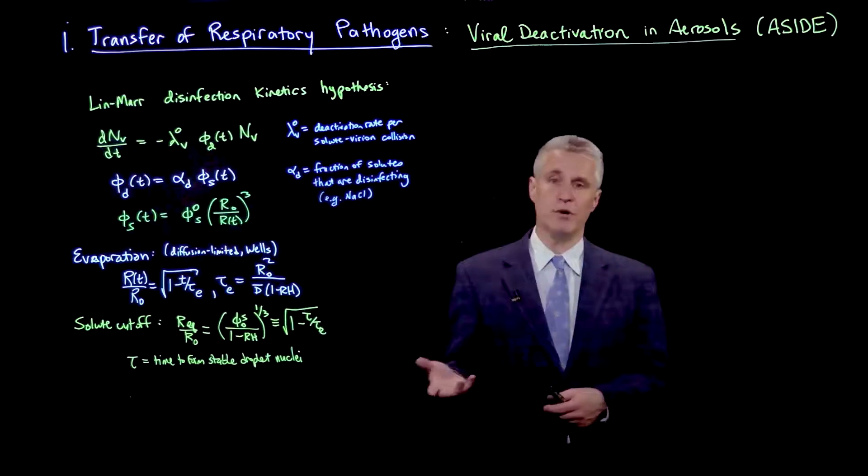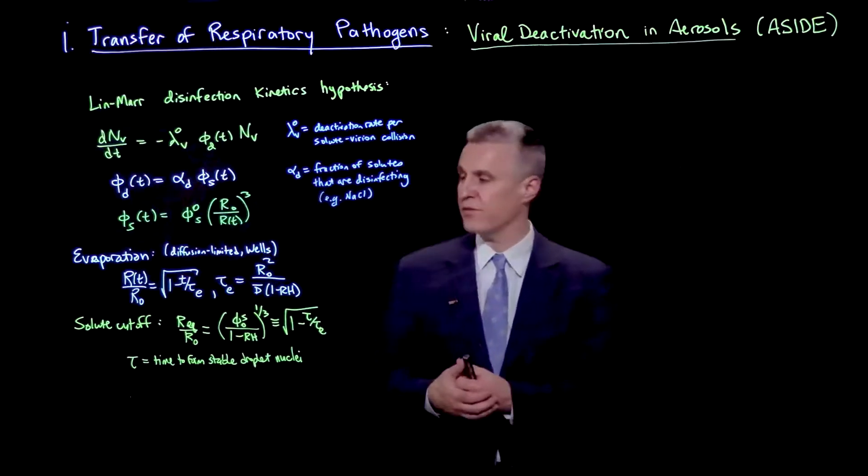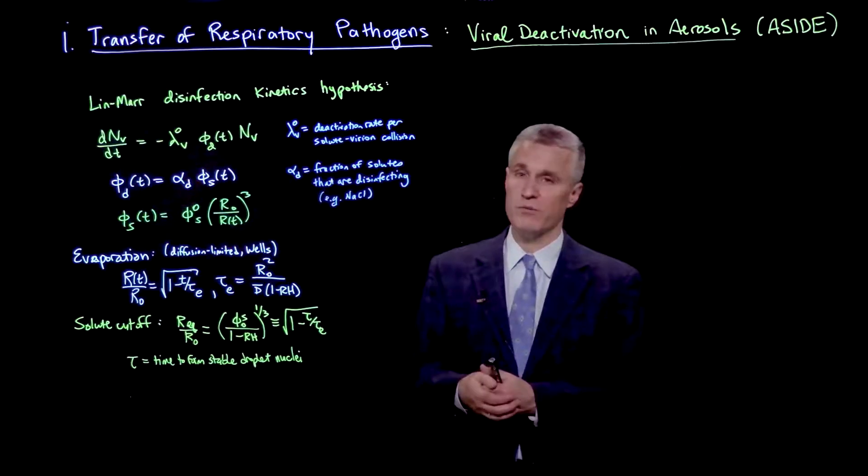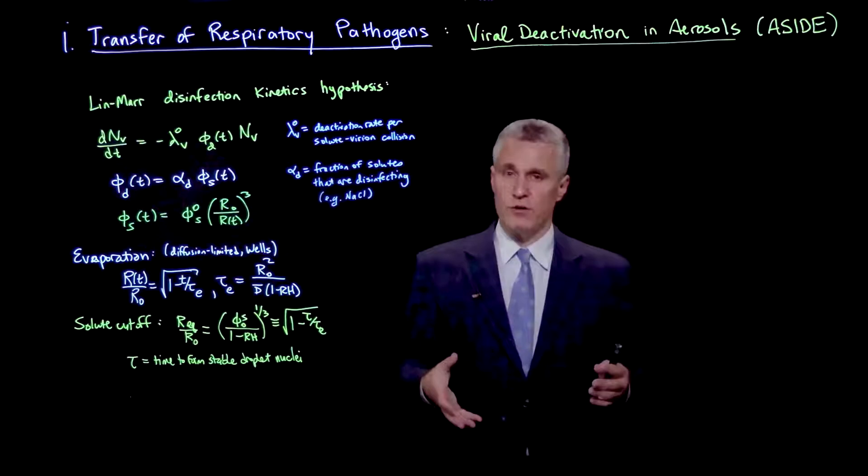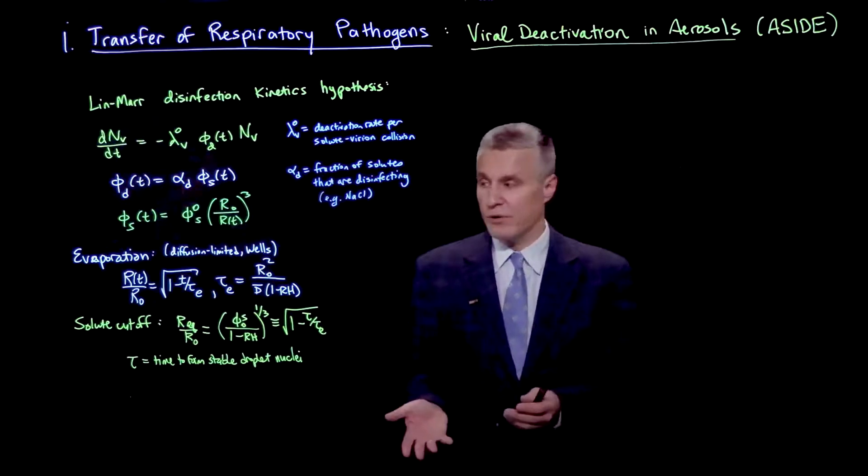Tau e equals r0 squared divided by d bar, a constant with units of diffusivity, times 1 minus rH, the relative humidity. That predicts pure liquid droplets that shrink all the way to nothing and evaporate away.